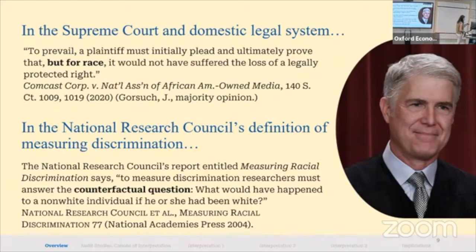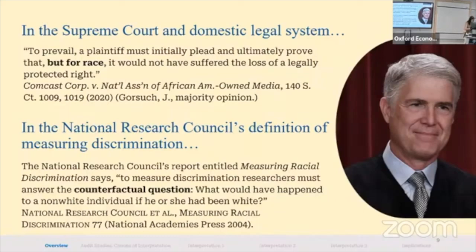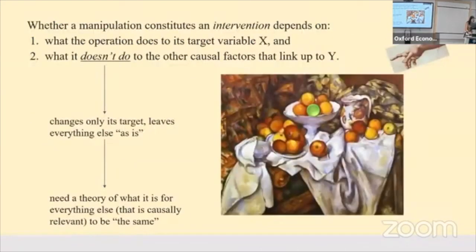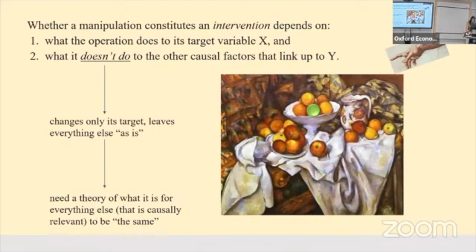Pearl says the same thing — it's a causal counterfactual question. This view of discrimination as causal counterfactual is also vindicated by the Supreme Court itself. There is a perceived close link between discrimination as a legal notion, a moral notion, and a causal notion. This causal standard — interventionism — requires a prior notion of 'all else equal' sameness and difference, and that's where the problem of variable construction rears its head.